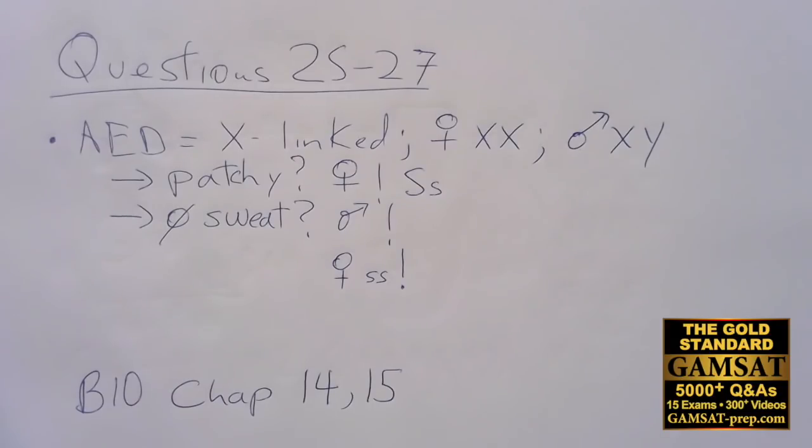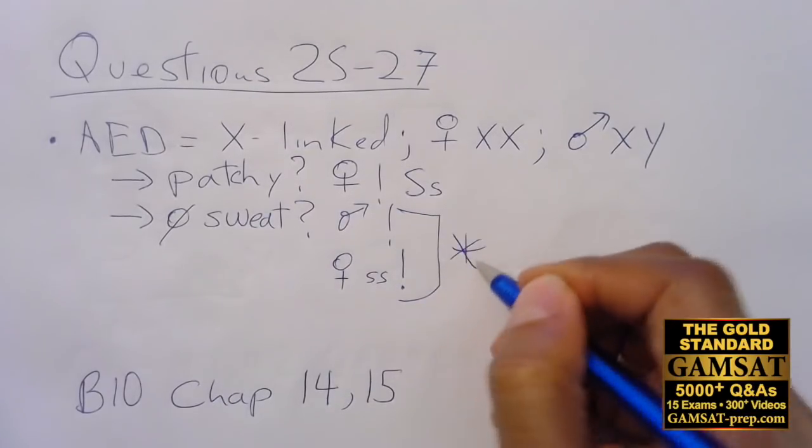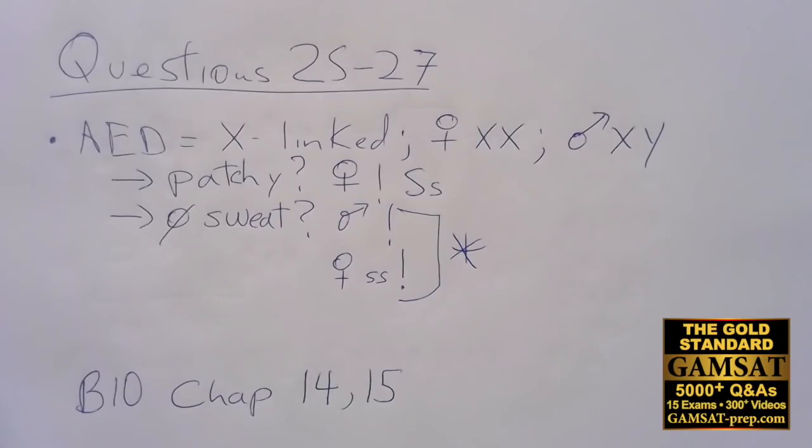Question 27: in which of the following is AED most likely... total absence of sweat glands. No sweat glands. Answer choice A: males inheriting X chromosome with the dominant allele. No, because if the male has the dominant allele, that means that they would definitely not express it. Answer choice B: males inheriting X chromosome with the recessive allele from the mother. That's exactly right. The recessive allele from the mother will definitely be expressed because there is no other X chromosome. So 27 is B.